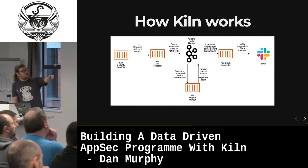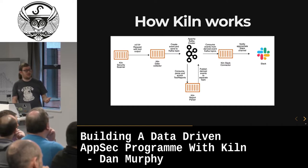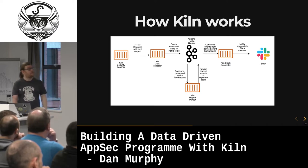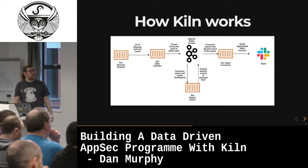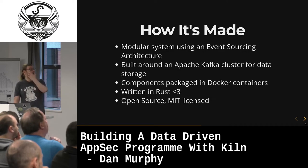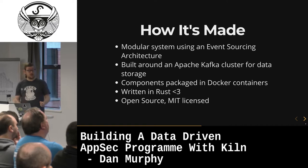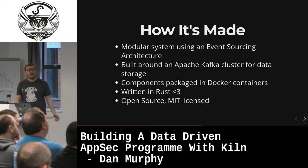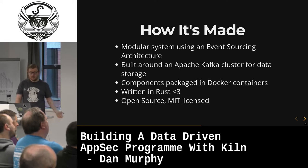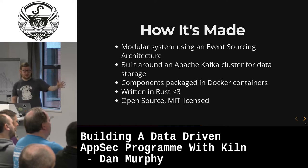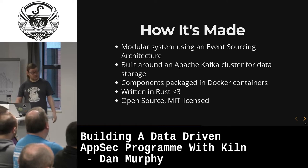The Slack connector and Bundler Audit are kind of our MVP — we cut our first release a couple of weeks ago. We're going to be expanding those in upcoming releases with more tools and more service connectors. It's a modular system built using an event sourcing architecture, built around an Apache Kafka cluster for data storage. Everything's packaged up in Docker containers, everything's written in Rust, and it's all open source under the MIT license — so you can use it for pretty much whatever you want.